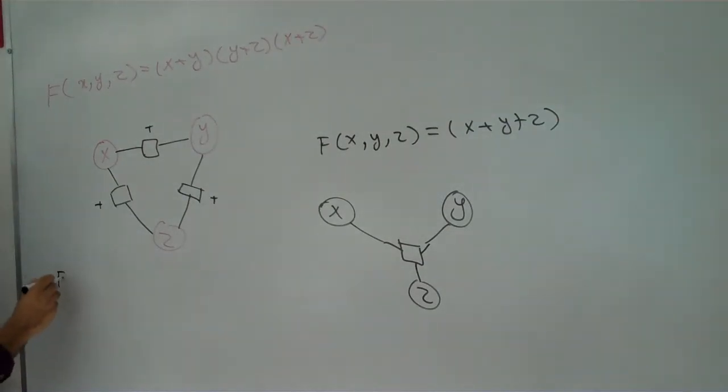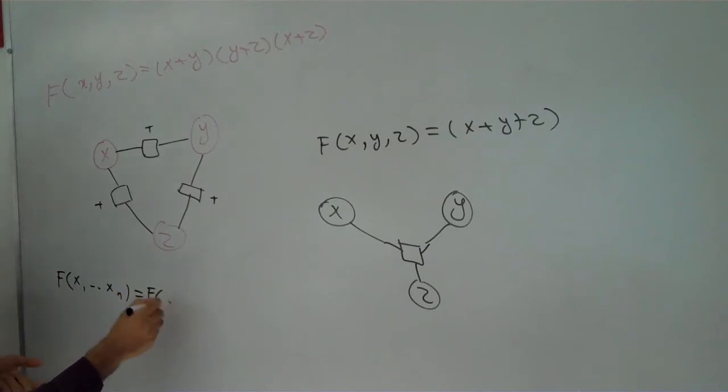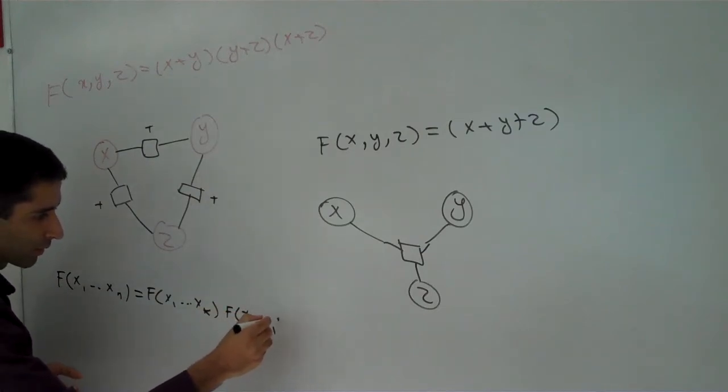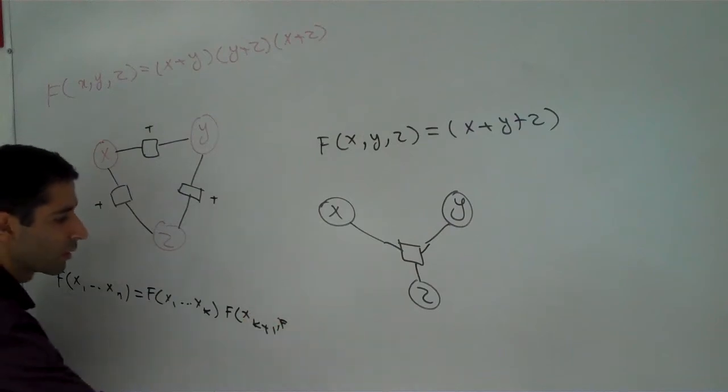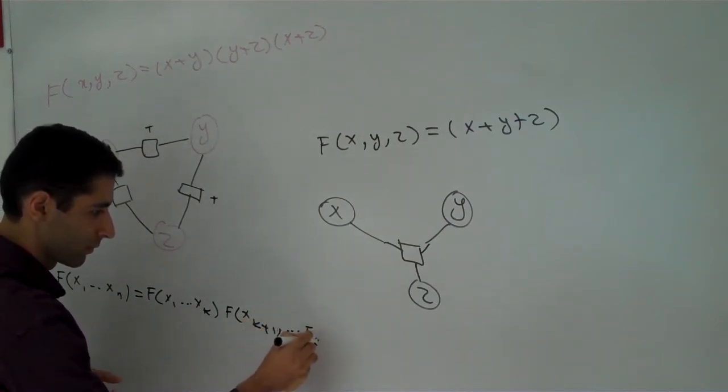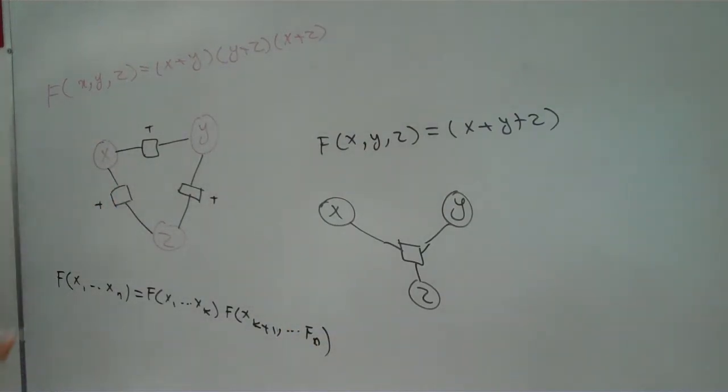For example, we can have f(x1, xn) is equal f(x1, xk), and f(xk plus 1), f, fn. So, the factor graph of this is x1, xk, and...